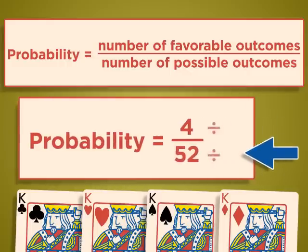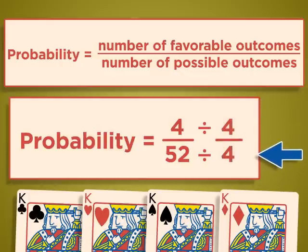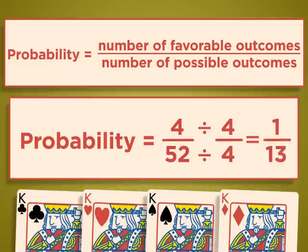Simplify the fraction by dividing both the numerator and denominator by 4. So, the probability of drawing a king is 1 in 13.